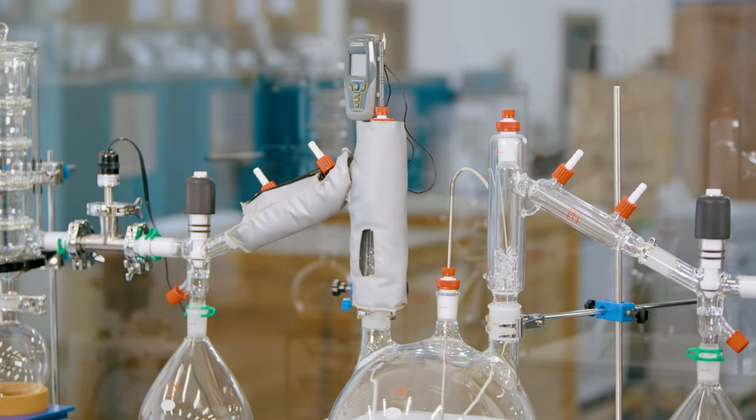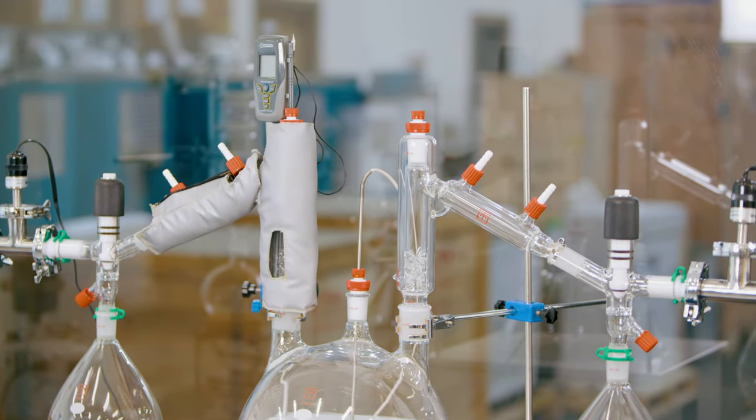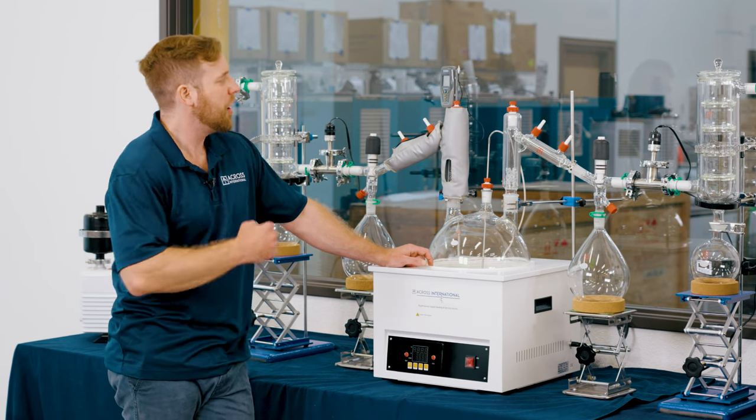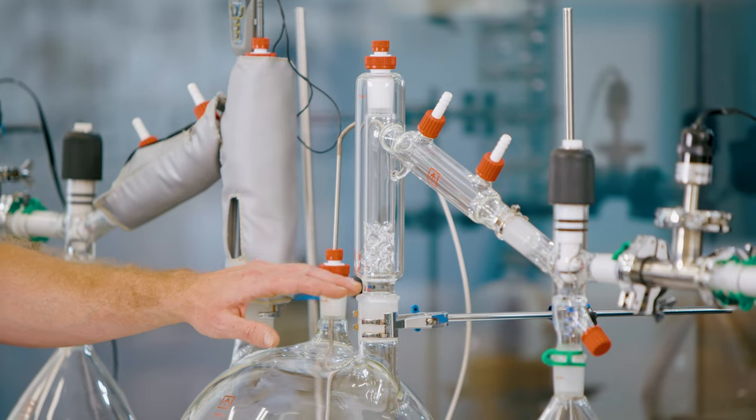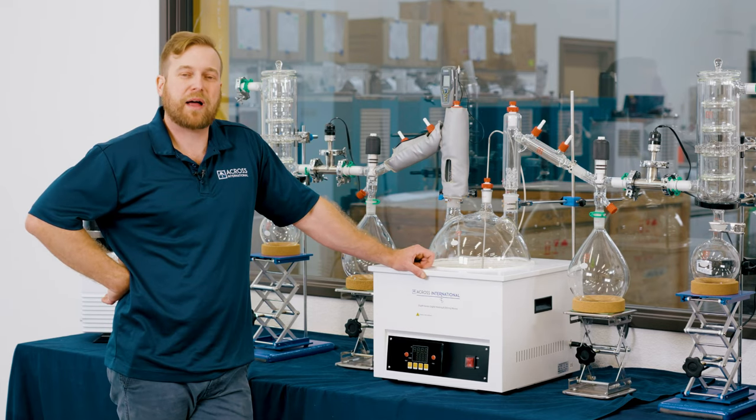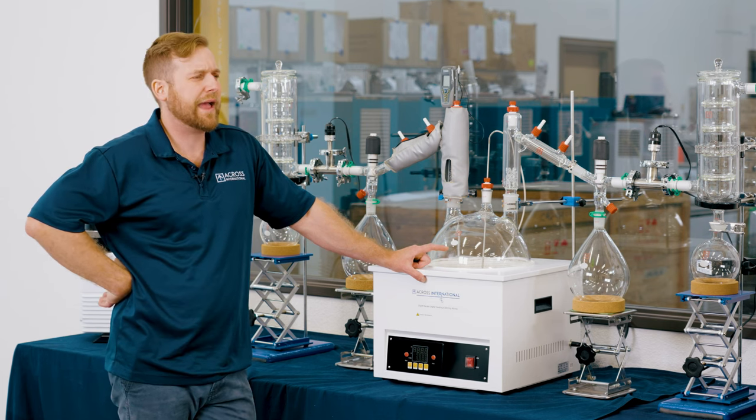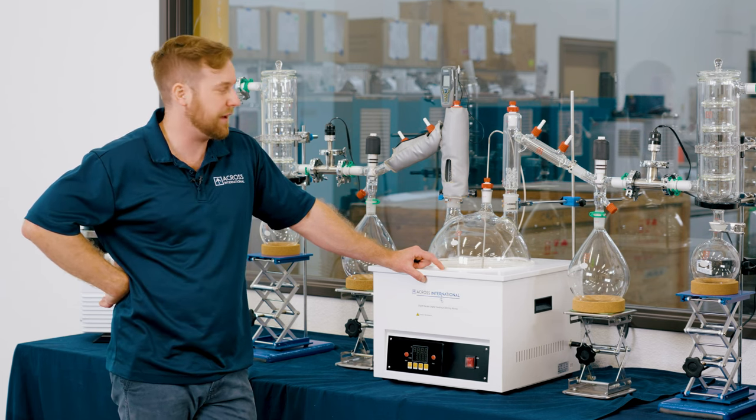Now at Across International, we have two different versions of condensers that you can utilize. Both are universal, so they can be used on all sides of our systems. One is our patented five Vigoro column, and the other is a column that allows for customizable packing. You'll be able to put your rashing rings in there and customize the packing within that unit.